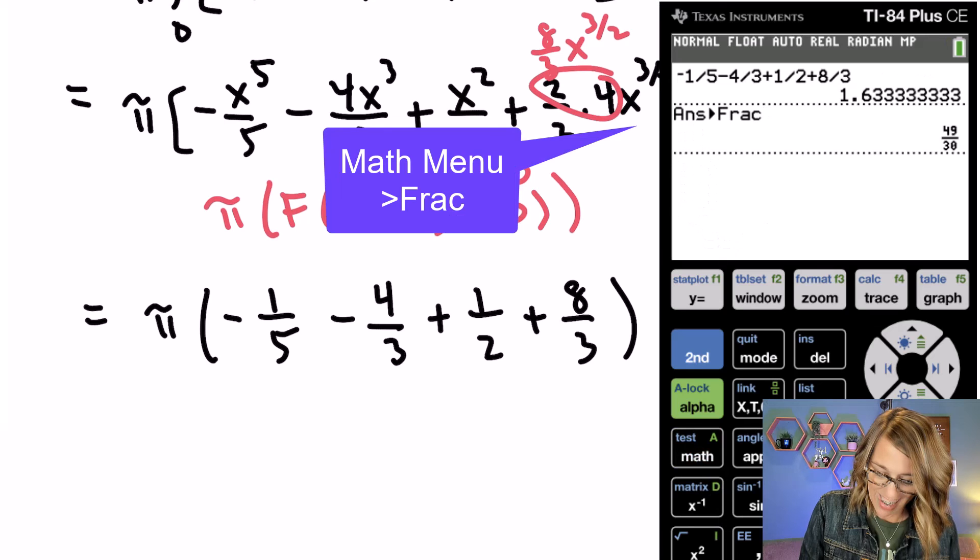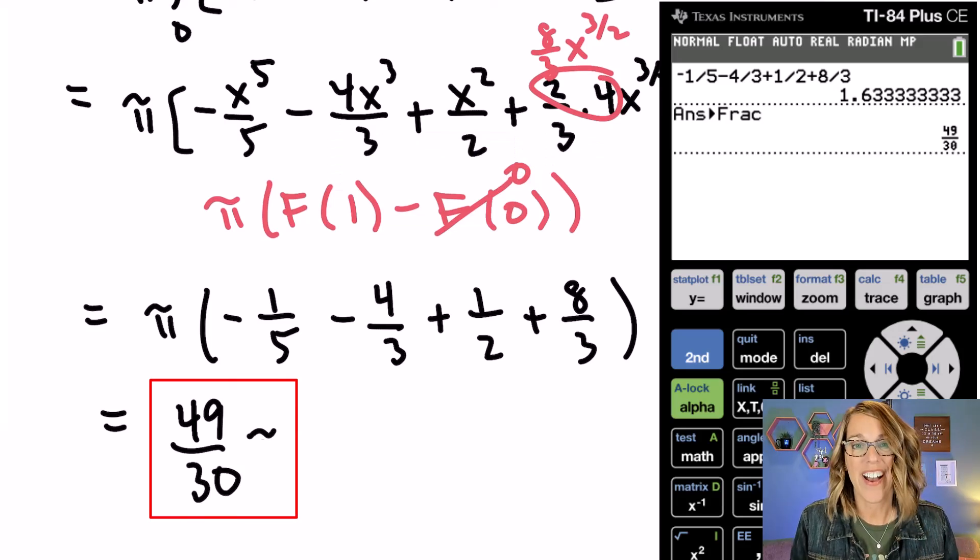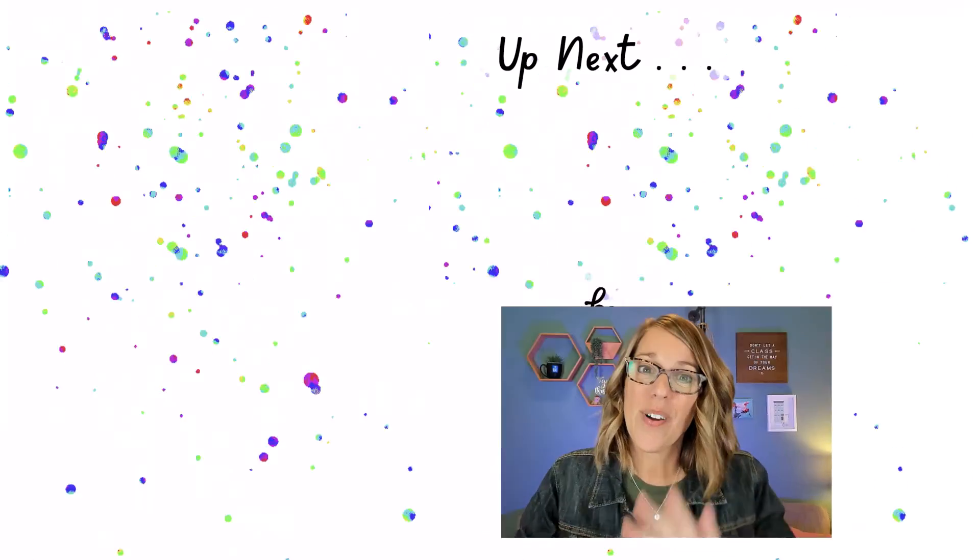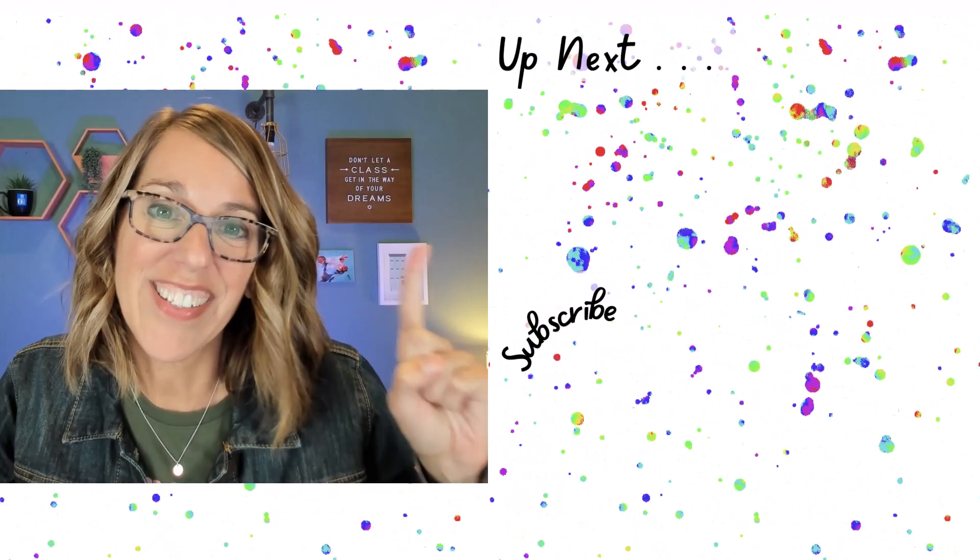Now adding all of this up in my calculator, I'm leaving the pi off. And I get the answer. Phew, I'm super happy. Which is 49 pi 30ths. You are doing so great. Alright. Shells is up next.